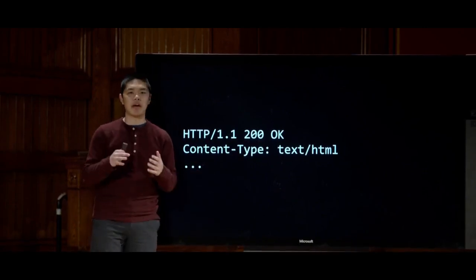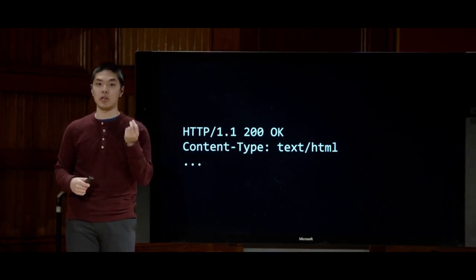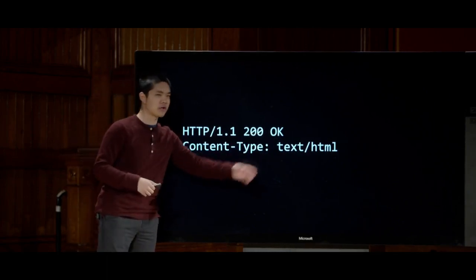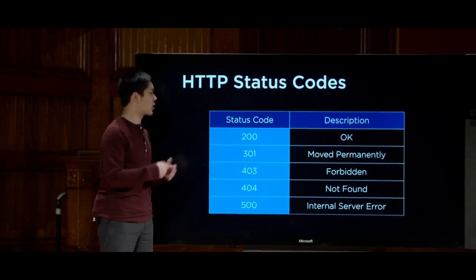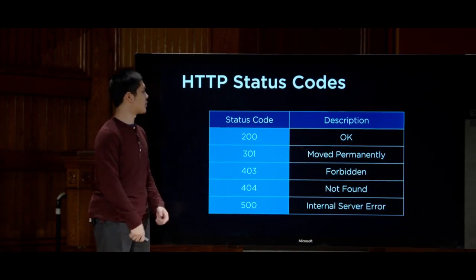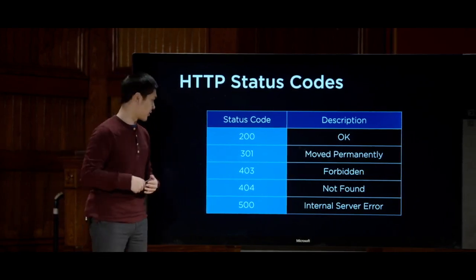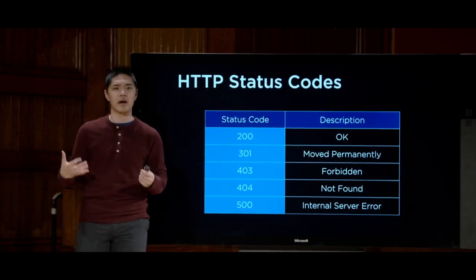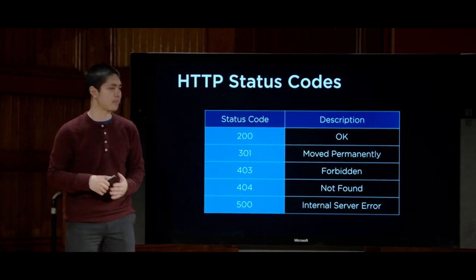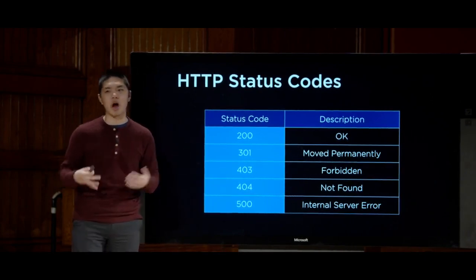The key idea is thinking about the web in terms of requests and responses. Common status codes include 200 (OK), 404 (not found, if you request a page that doesn't exist), 301 (moved permanently, often when redirected), 403 (forbidden, if you try to access a page you're not supposed to), and 500 (internal server error, usually meaning something buggy in our Django web application that we need to fix).